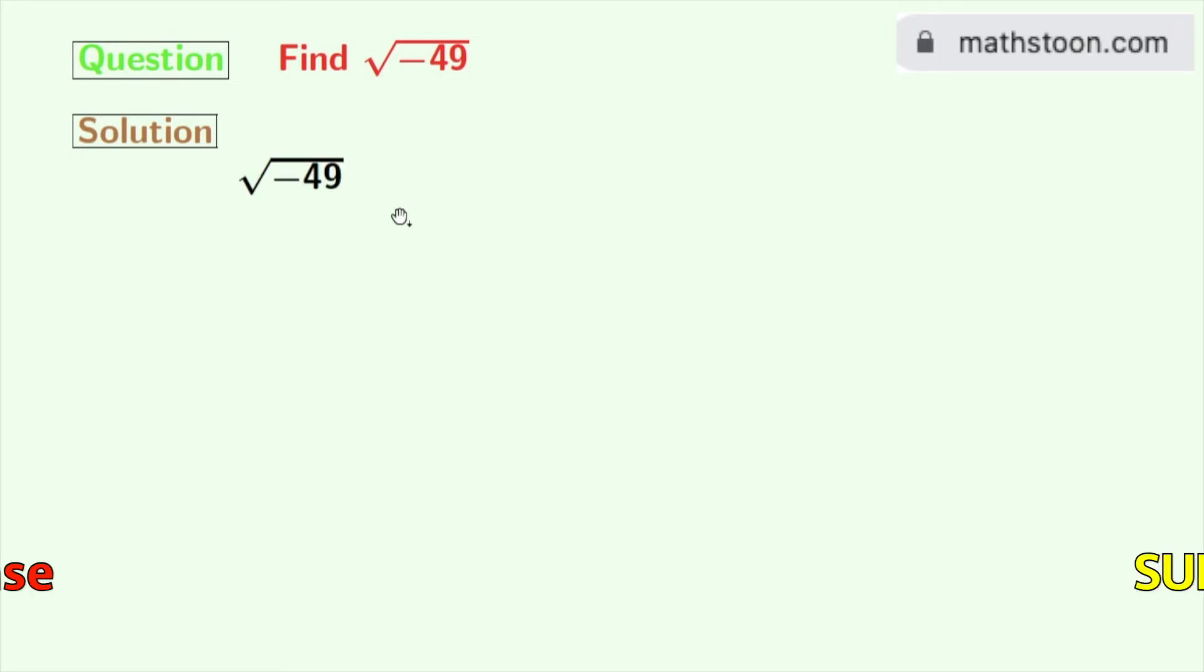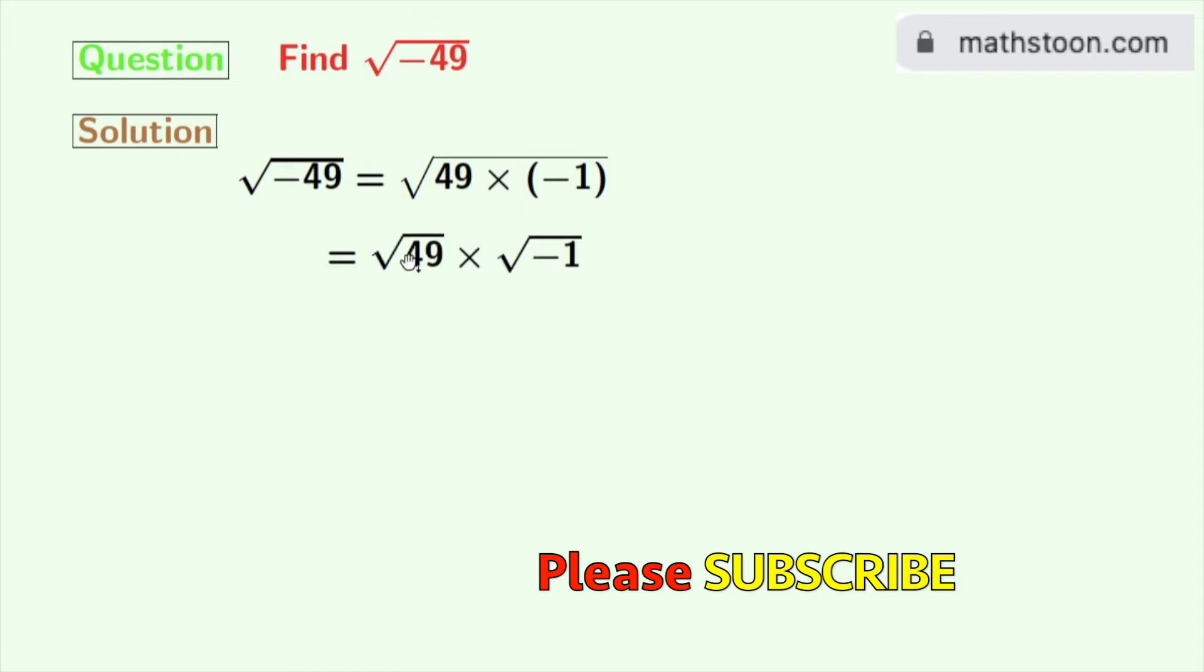Square root of minus 49 can be written as square root of 49 times minus 1. Now this can again be written as square root of 49 times square root of minus 1.